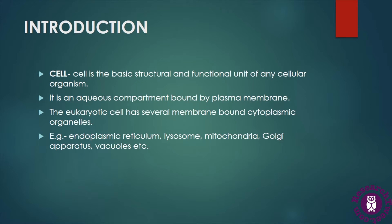Cells are of two types: prokaryotic cells and eukaryotic cells. The eukaryotic cell is a properly modified cell which has several membrane-bound cytoplasmic organelles, whereas the prokaryotic cell lacks these membrane-bound cellular organelles.